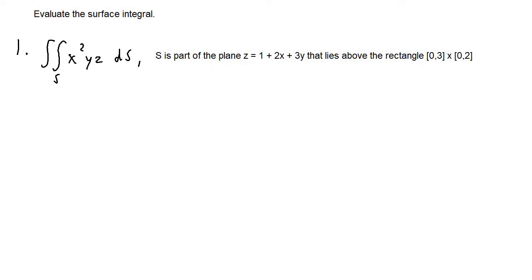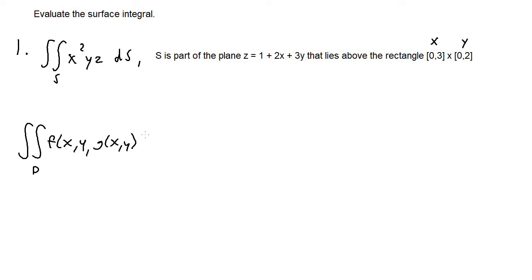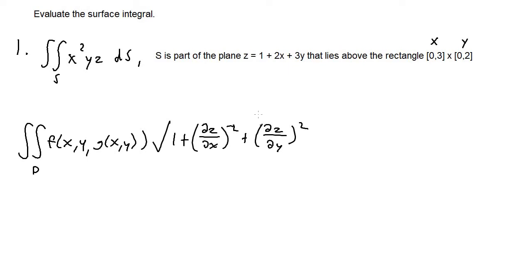For number one, we have the double integral over surface S of x²yz dS. S is part of the plane z = 1 + 2x + 3y that lies above the rectangle where x goes from 0 to 3 and y goes from 0 to 2. Rewriting the formula: the double integral over region D of f(x, y, g(x,y)) times the square root of 1 plus the partial derivative of z with respect to x squared plus the partial derivative of z with respect to y squared, times dA.